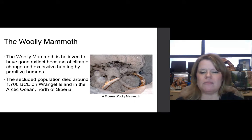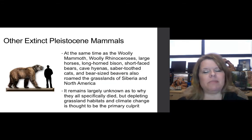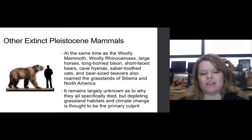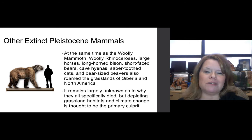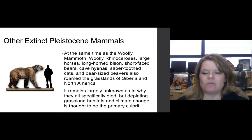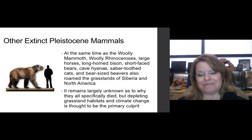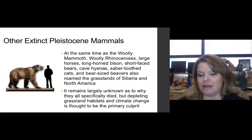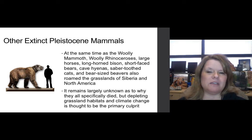Other extinct Pleistocene mammals that roamed at the same time as the woolly mammoth include woolly rhinoceroses, large horses, long-horned bison, short-faced bears, and bear-sized beavers, along with the saber-toothed cats of Siberia and North America. It remains largely unknown as to exactly why they all specifically died, but depleting grassland habitats and climate change are thought to be the primary culprits of their demise.